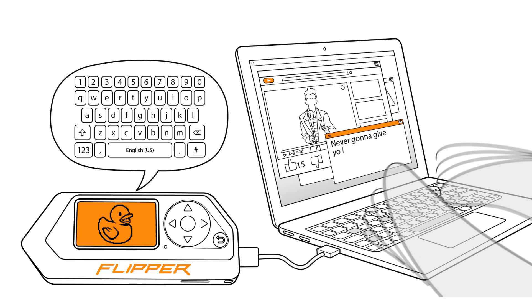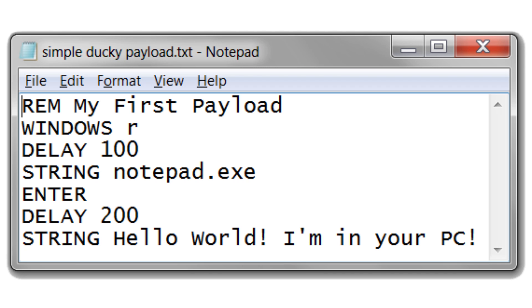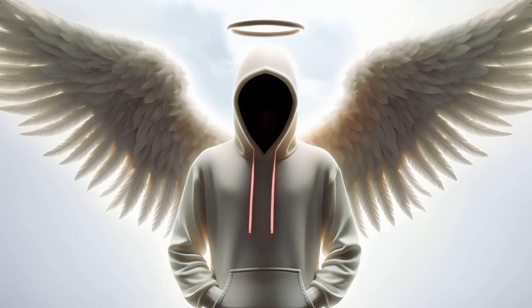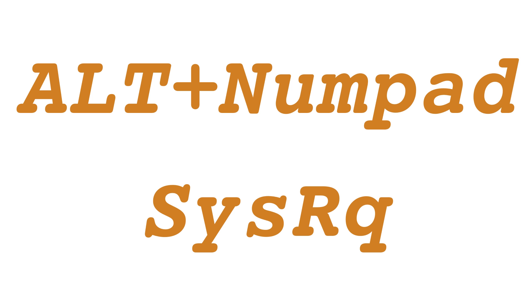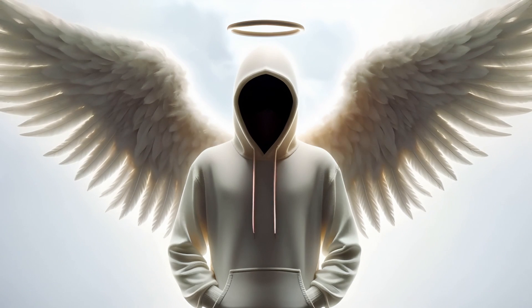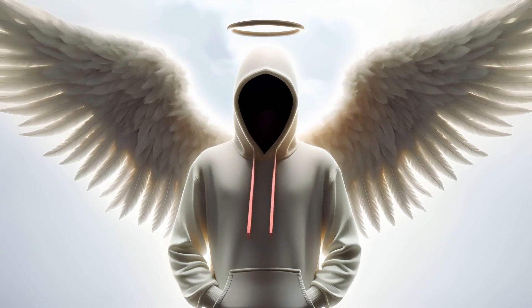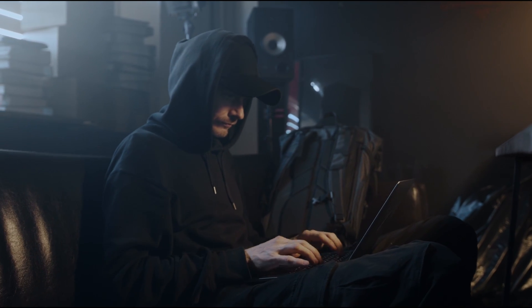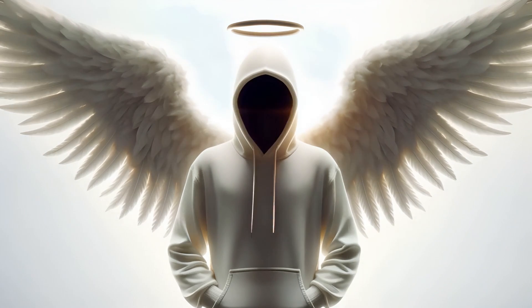The Flipper Zero supports an enhanced version of the rubber ducky scripting syntax, offering compatibility with the original rubber ducky scripting language 1.0, while introducing additional commands and functionalities like the alt plus numpad input method and the system request command. The Flipper Zero accommodates both newline and carriage return followed by newline line endings, and permits empty lines as well as the use of spaces or tabs for script indentation. The bad USB application only processes scripts in .txt format, eliminating the need for script compilation.